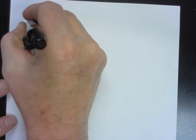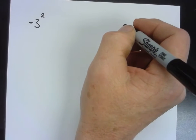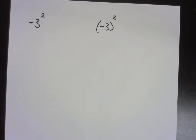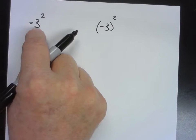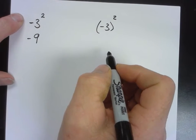You've done exponents in other years, so none of that should be new. But this next part — we're not just talking about counting numbers or whole numbers anymore, we're talking about integers, so we have to talk about negatives. Parentheses make a difference. If I do this problem: 3 squared is 9, and then the opposite of that is negative 9, because exponents come before subtraction in order of operations.